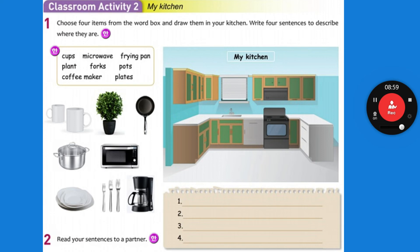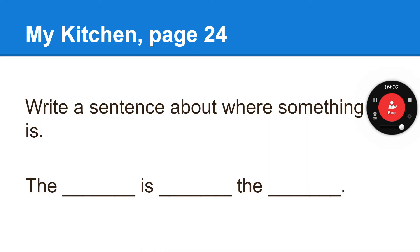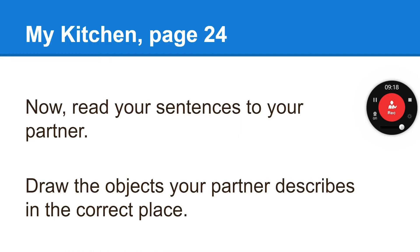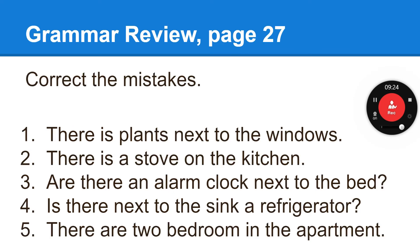Once again, this is the format for your four sentences. Note that 'is' can be 'are' for your forks, because there's more than one of them, and the same with your cups. Grammar review — we're going to go to page 27. Grammar review is very important because this is how you're going to study for your test. Correct the mistakes. 'There is plants next to the windows' — plants is more than one, so it should be 'there are plants.' 'There is a stove on the kitchen' — your stove isn't on the kitchen, it's in the kitchen. 'There is a stove in the kitchen.'